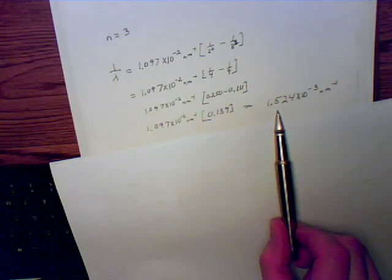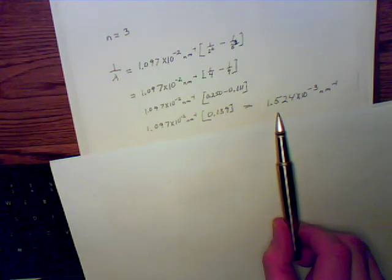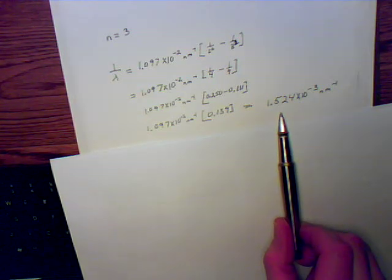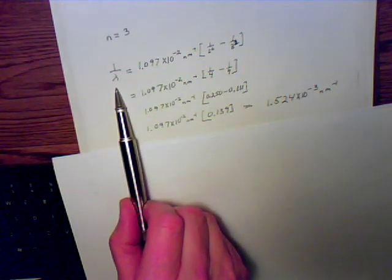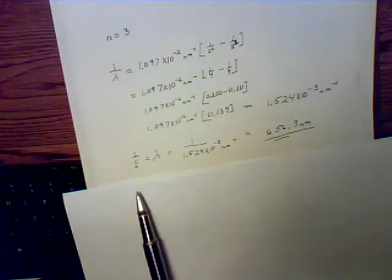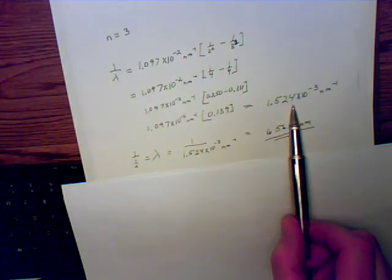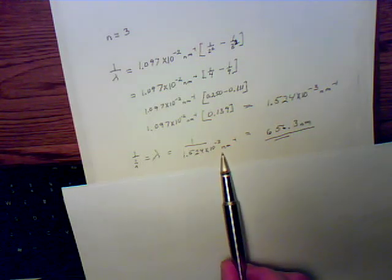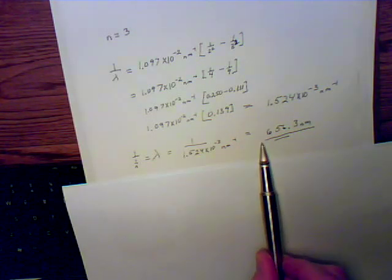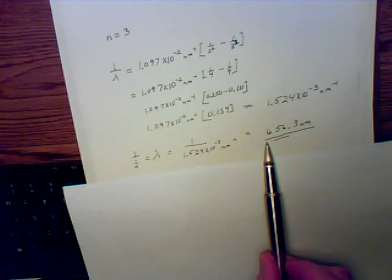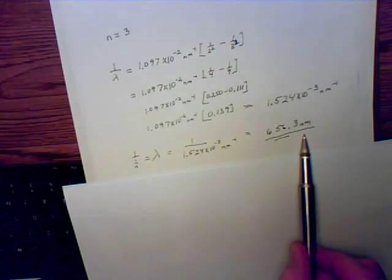That's one of the answers they get on the page for the problem. Then they find the wavelength which is the reciprocal of 1 over lambda. So 1 over 1 over lambda is just lambda. 1 over 1.524 times 10 to the minus third reciprocal nanometers. You will have to plug that into your calculator. You obtain 656.3 nanometers.